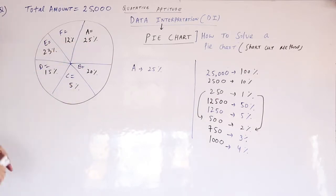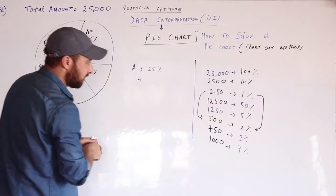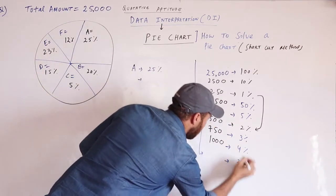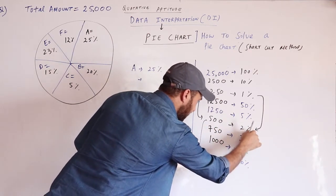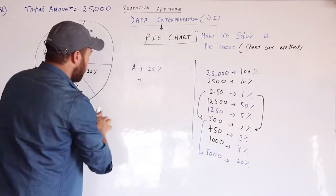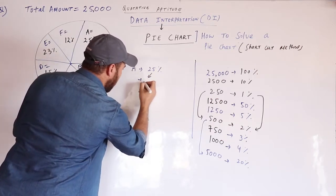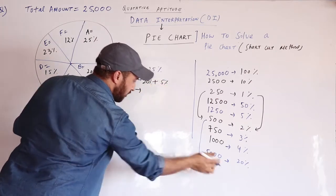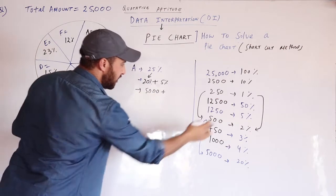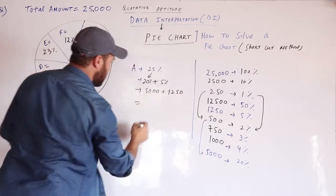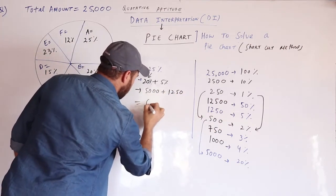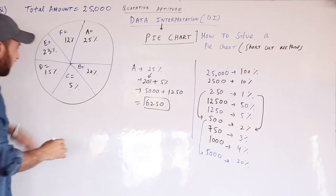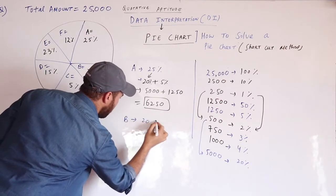Let us take 25% of 25,000. First, 20% — since 2% is 500, multiply by 10, so 20% equals 5,000. Then, 25% means 20% plus 5%: 20% is 5,000 and 5% is 1,250. So 25% of 25,000 equals 6,250.